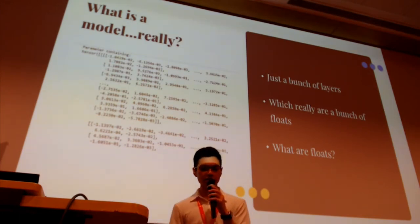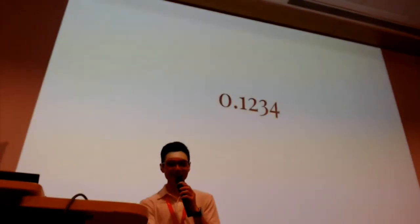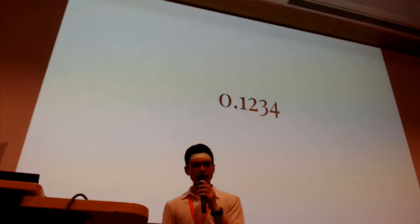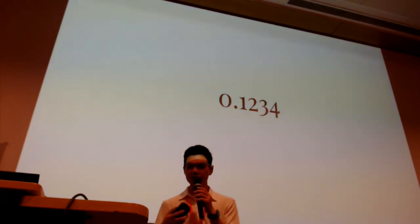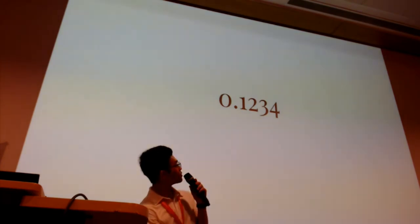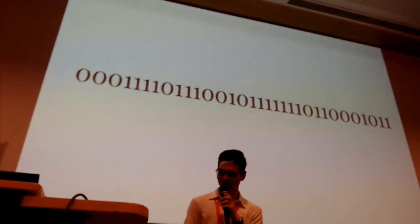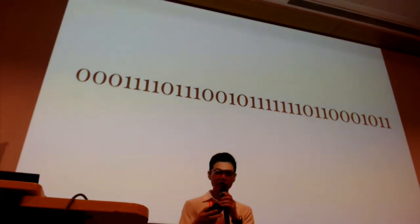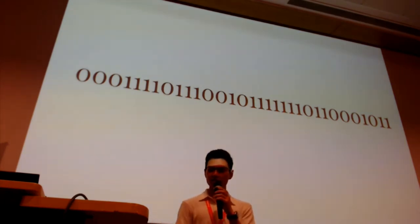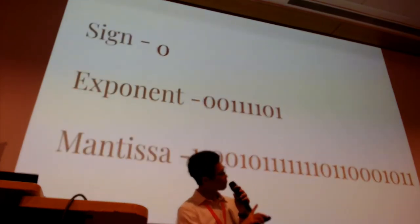Reading models are just a bunch of layers, which in turn are just a bunch of nodes. So, what are nodes? This is a node: 0.1234. How does the computer represent and understand this information? This is called the IEEE 754 standard. In order to unwrap and understand it, let's split this number into three parts: the sign, exponent, and mantissa.